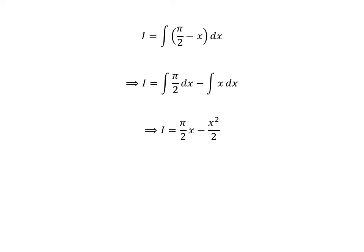These are simple integrations. As half of pi is constant, so integration of half of pi is half of pi times x, and integration of x is square of x upon 2.